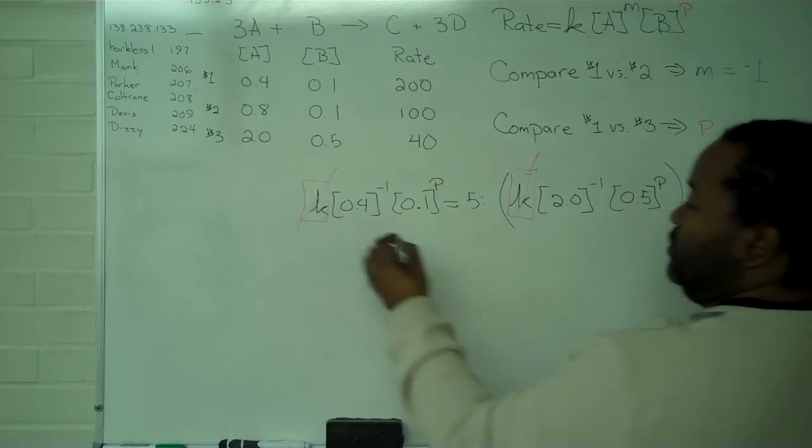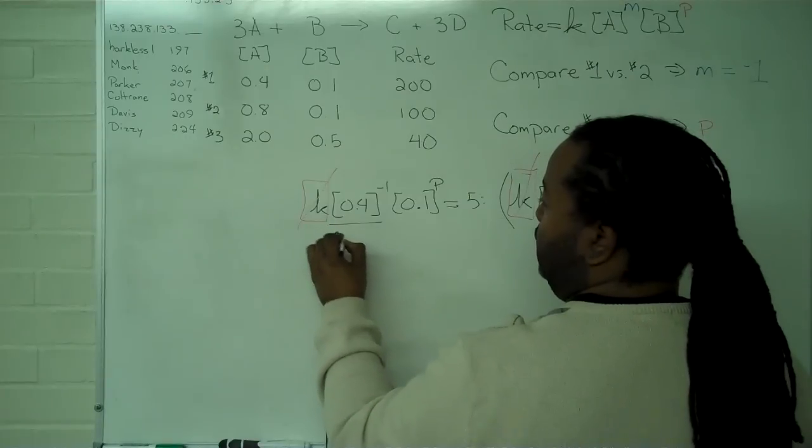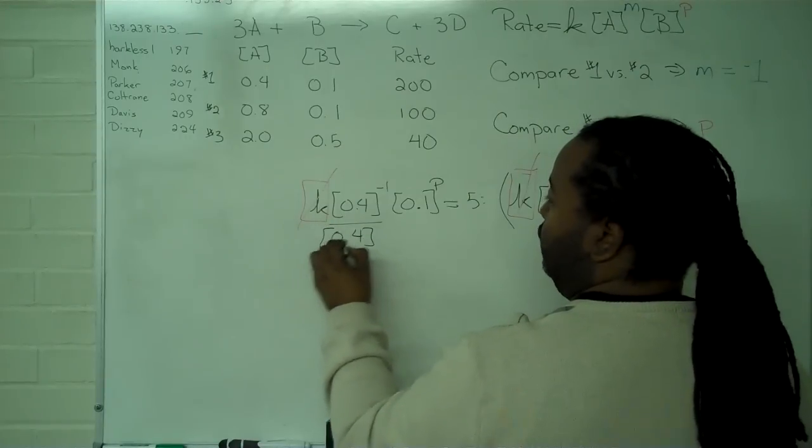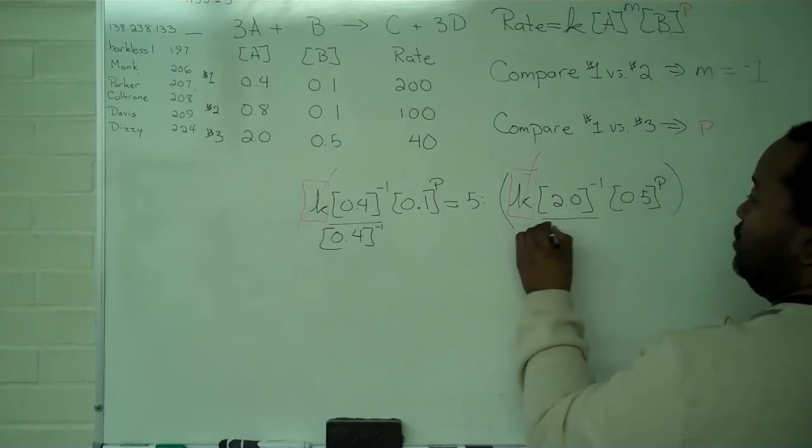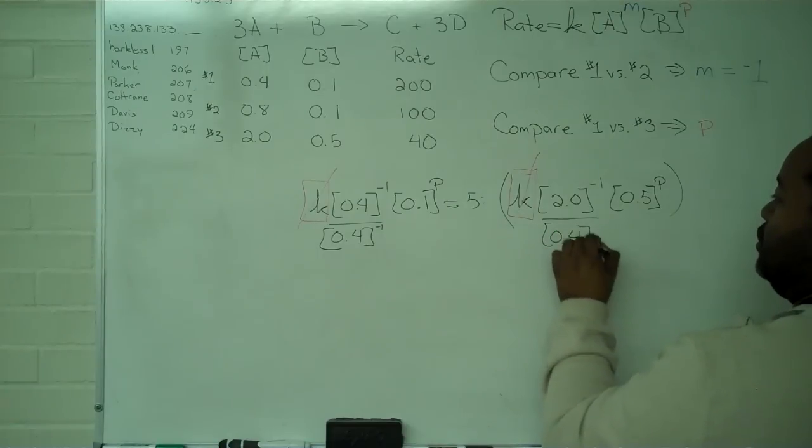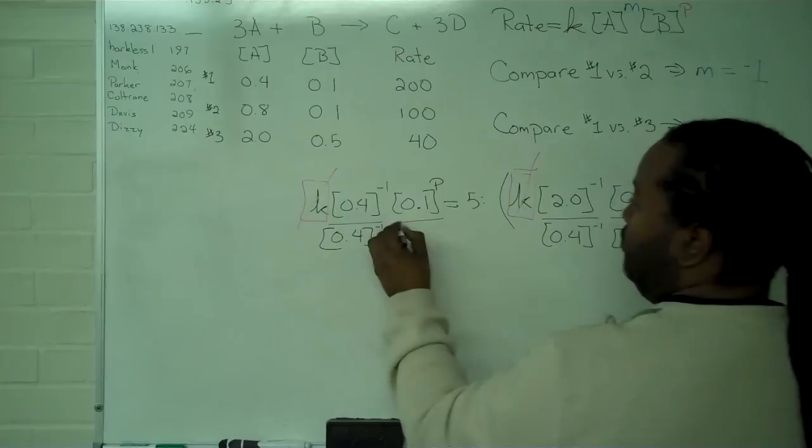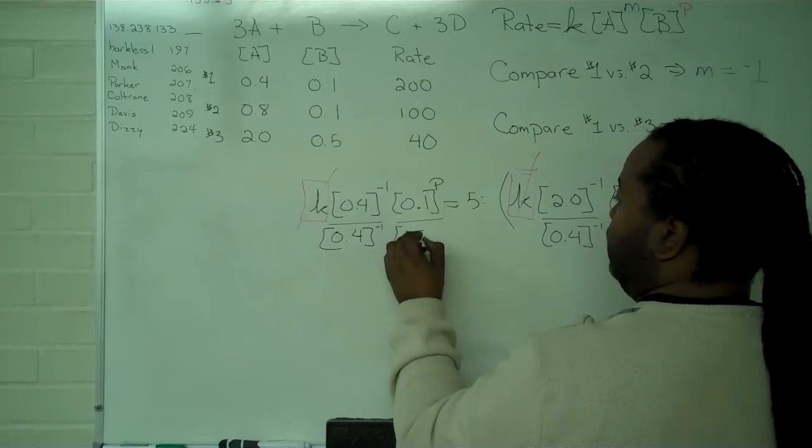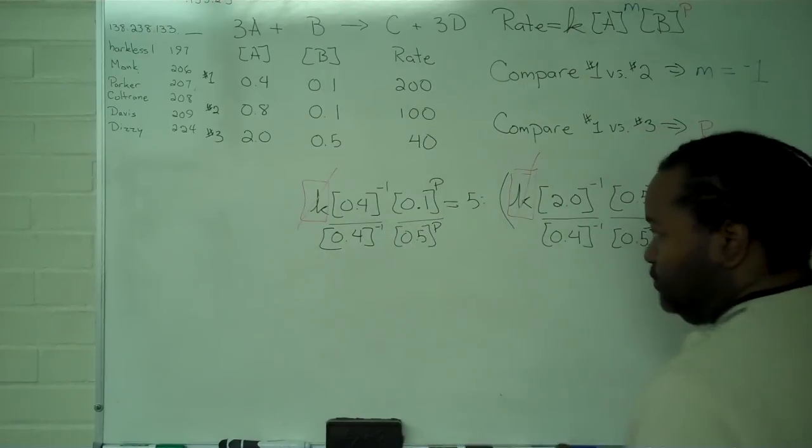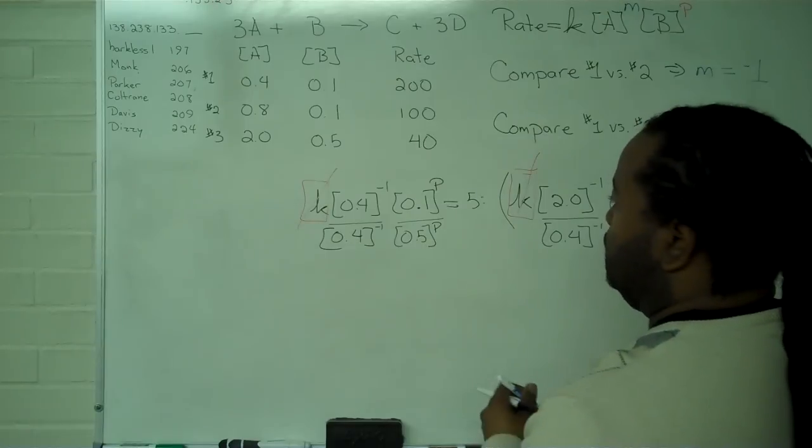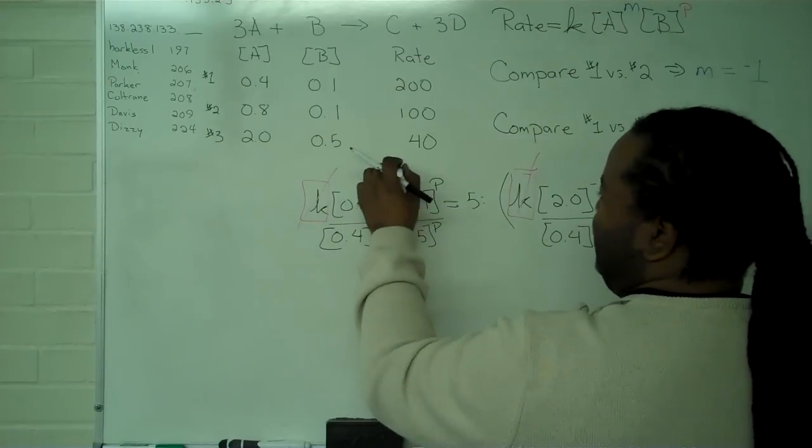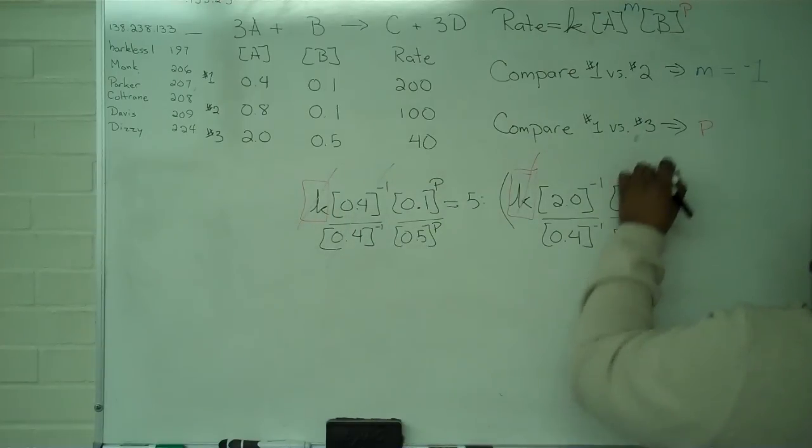However, we do know that we want all of our numbers on one side. So, I will divide by 0.4 to the negative 1. And to get P on the left-hand side by itself, I'll divide by 0.5 to the P. This results in a cancellation here, and a cancellation here.